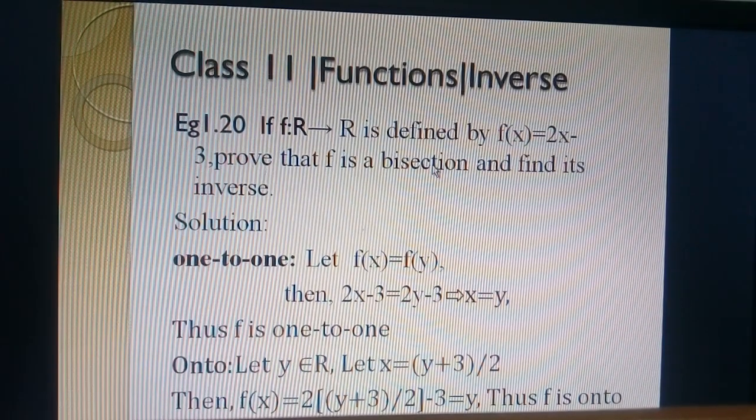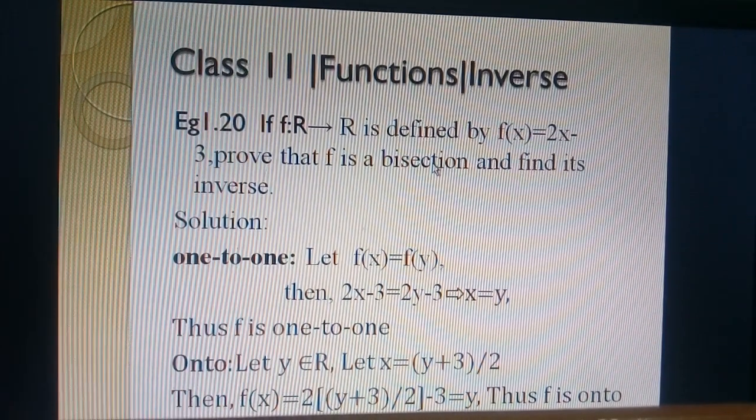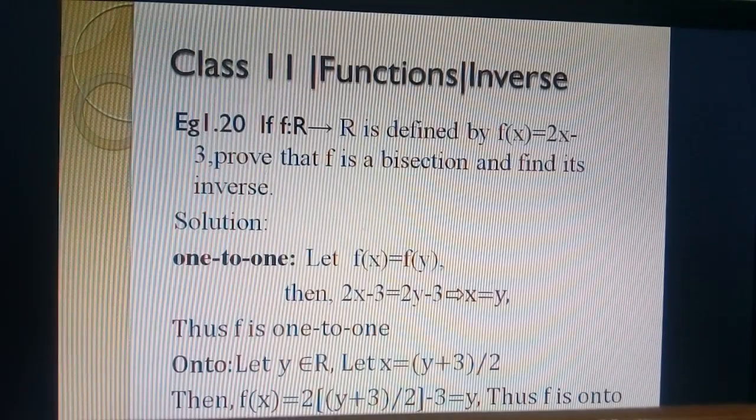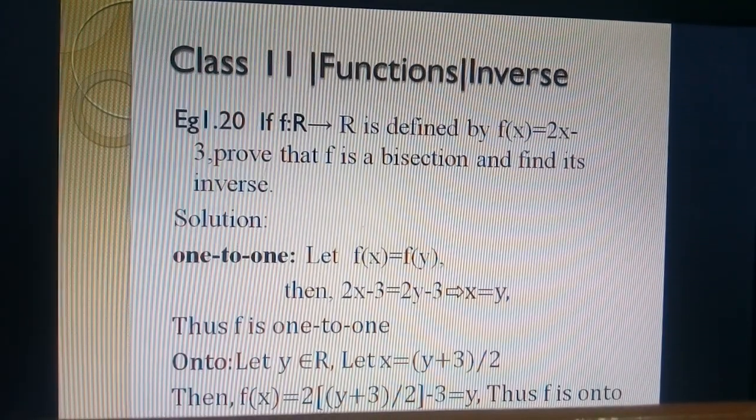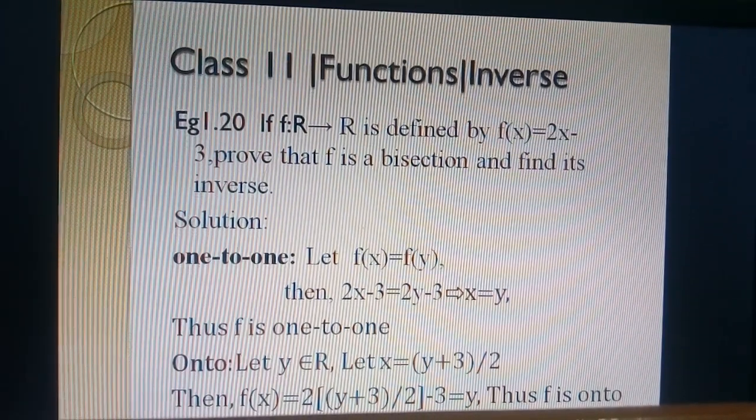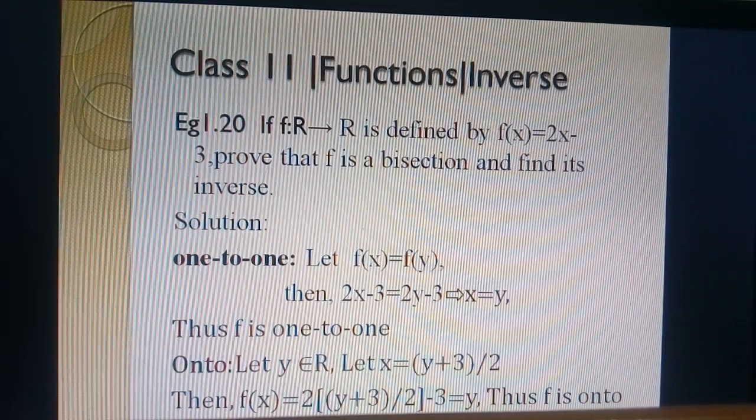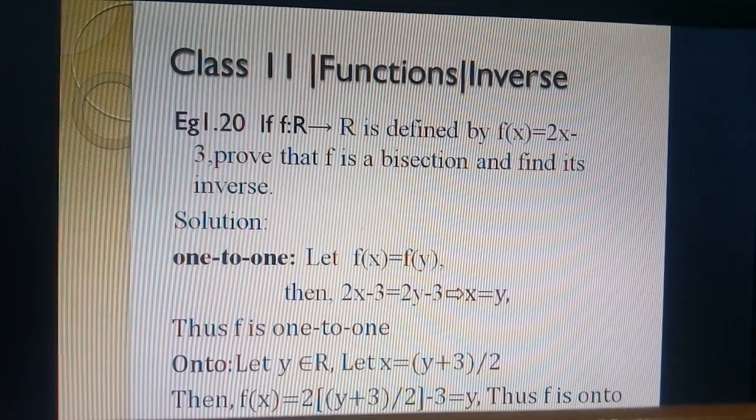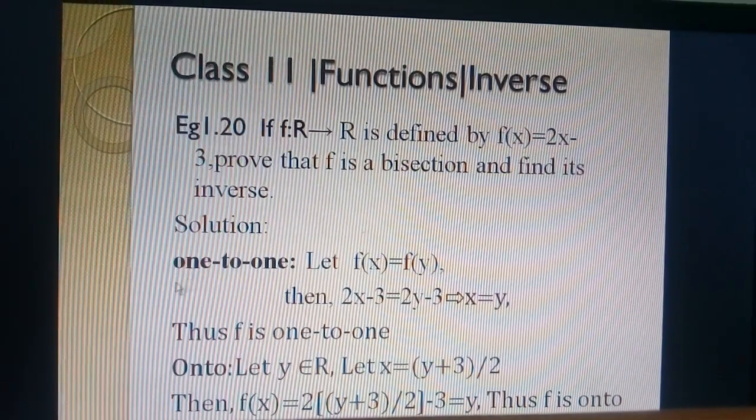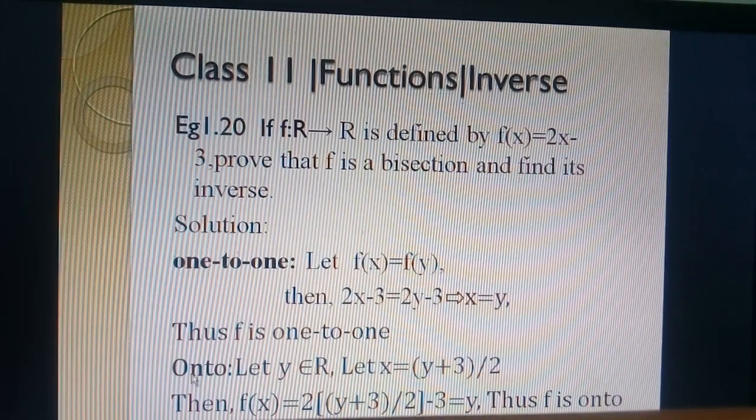f is a bijection means we show f is one-to-one and also onto. Next, we find inverse. Always before proving or before finding the inverse, we have to show given function is a one-to-one function and also onto function.